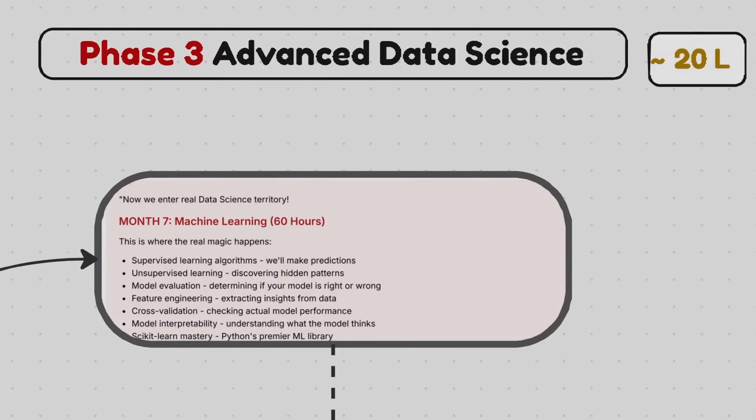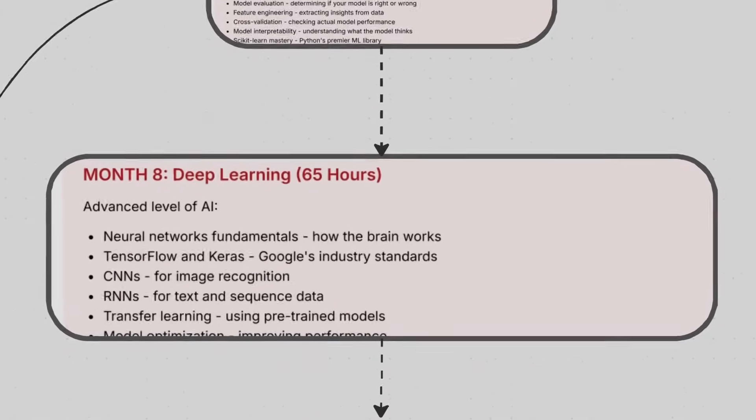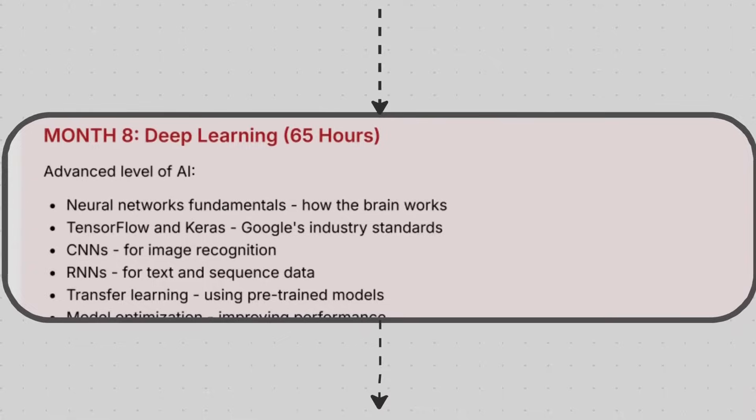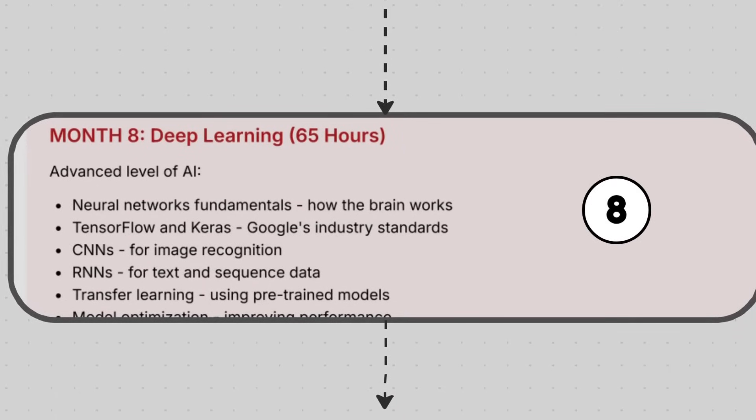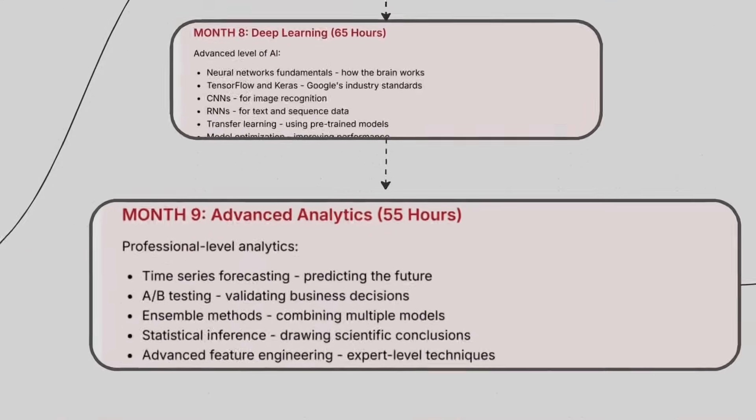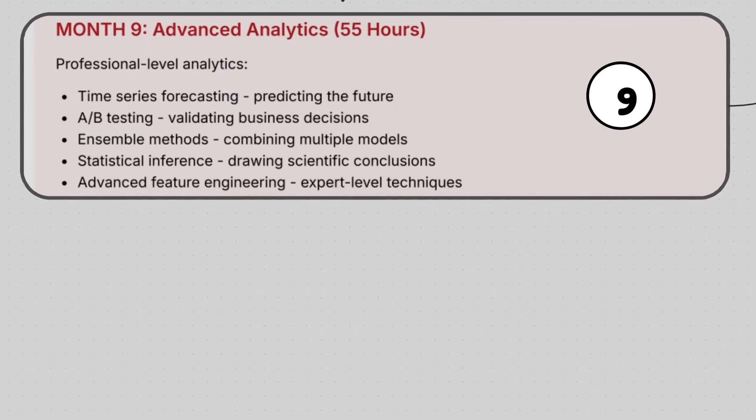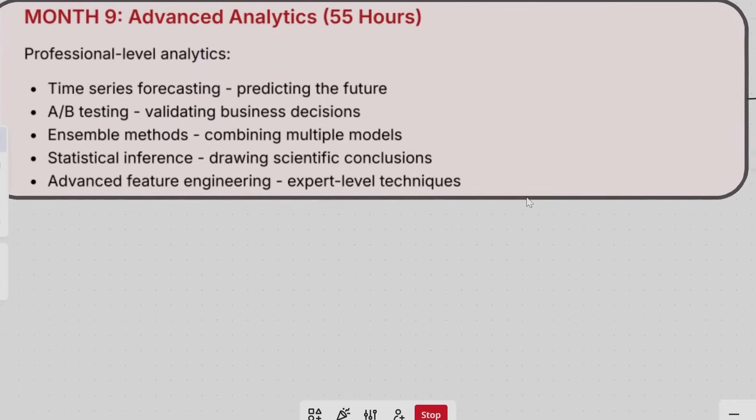Thereafter, we will enter the second topic which comes after machine learning, which is deep learning. We will talk about the advanced level of artificial intelligence. We will talk about neural networks fundamentals, TensorFlow and Keras which is Google's industry standard, CNN for image recognition, RNN for text and sequence data, transfer learning, and model optimization. Thereafter we will talk about advanced analytics like time series forecasting, A/B testing, ensemble methods, and statistical inference. These are all very advanced concepts that we will see.